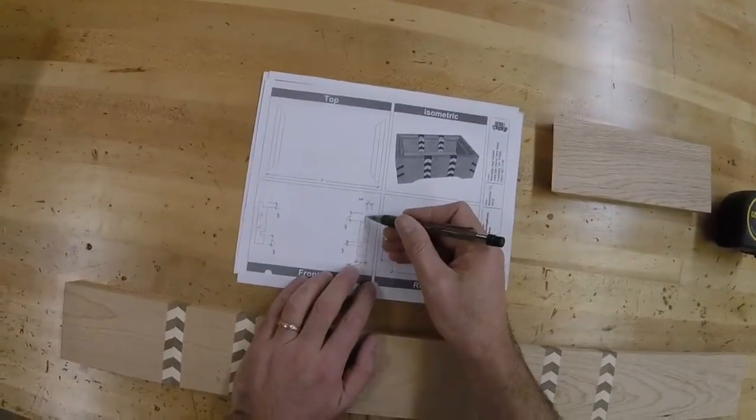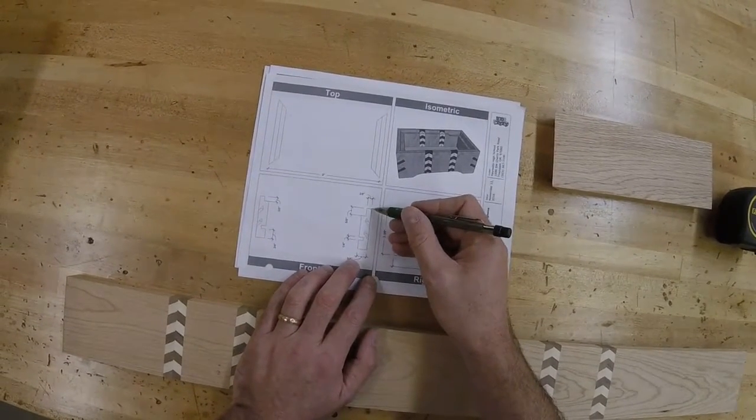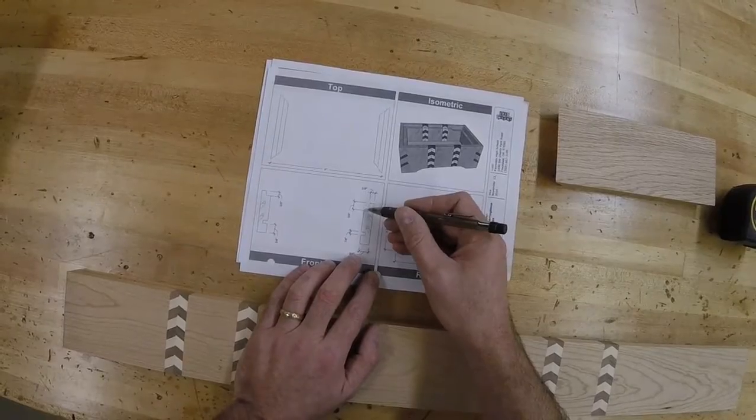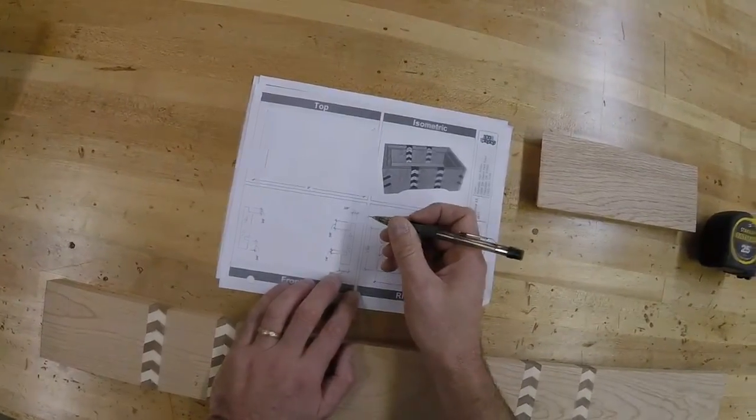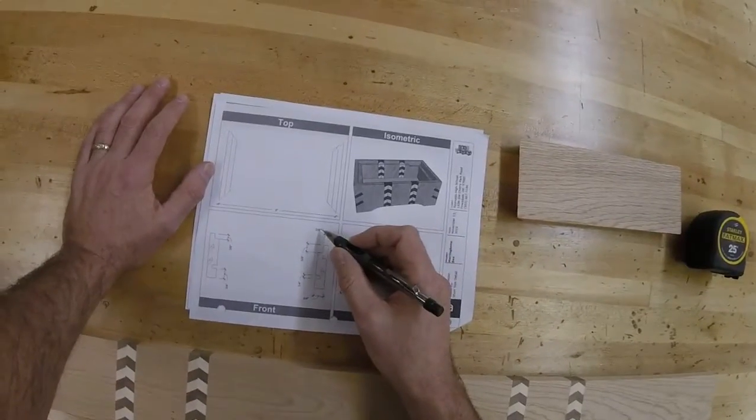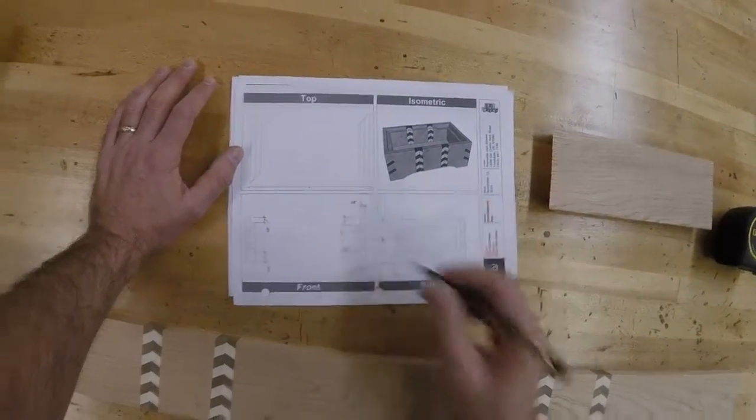So I can look at my drawing, it's going to be 5 eighths of an inch down, and the outside edge will be 3 eighths of an inch. So since we overcut this by a sixteenth, that's going to be, let's see here, 3 eighths will be 6 sixteenths. So this would actually be 5 sixteenths for us by 5 eighths.